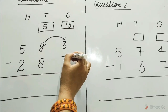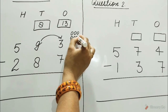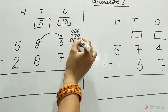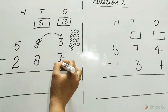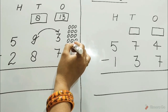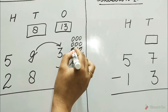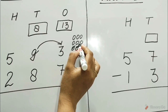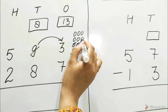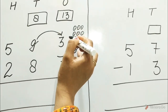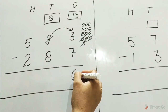Now subtract the ones. Draw 13 circles and cut 7 circles from the 13. Count all the remaining circles: 1, 2, 3, 4, 5, 6. It is 6. Write 6 in the ones column.